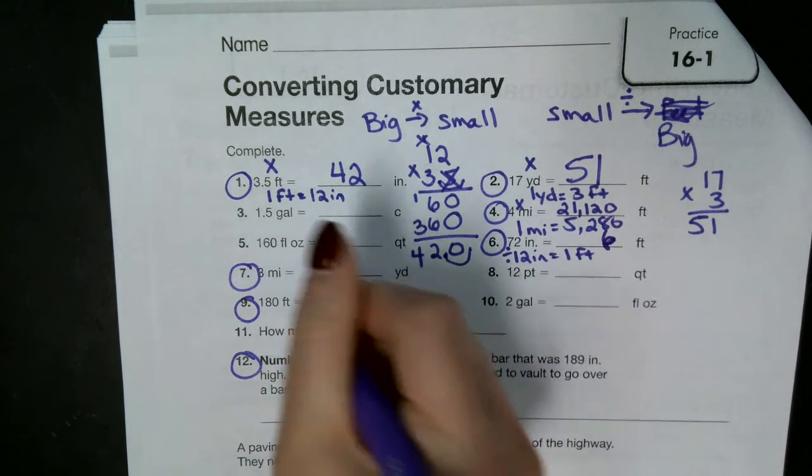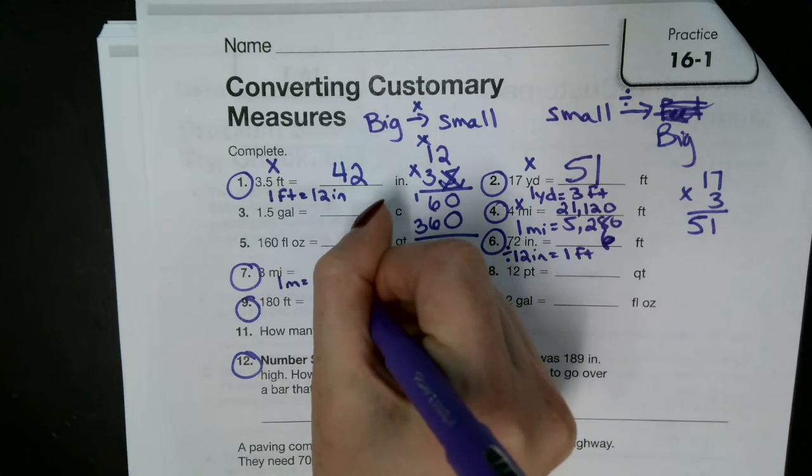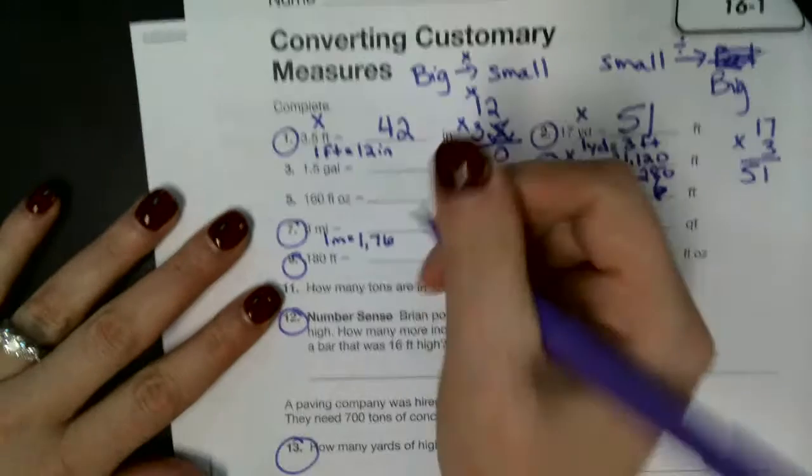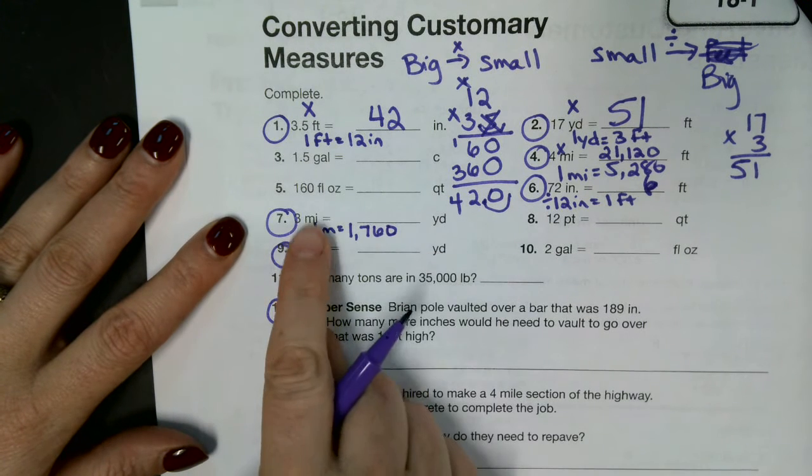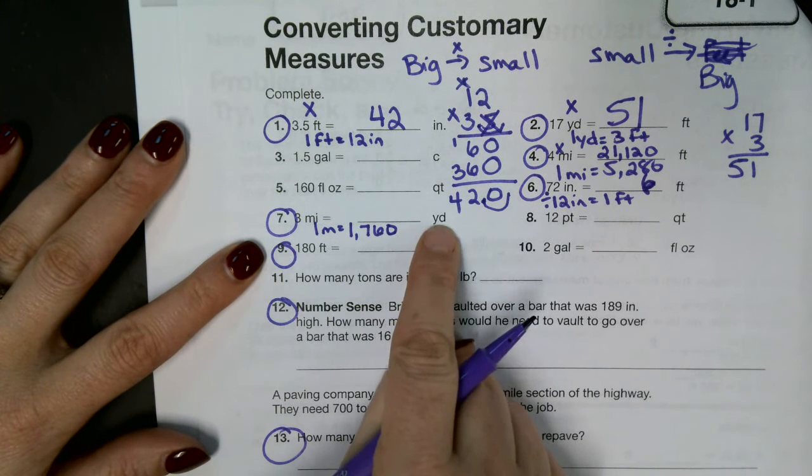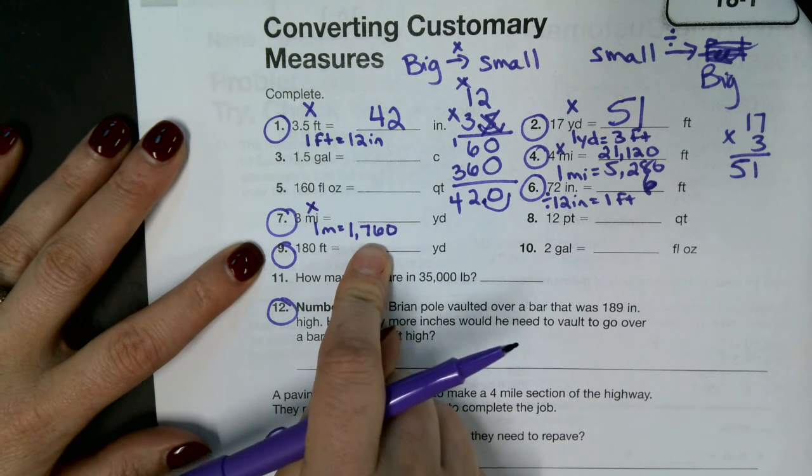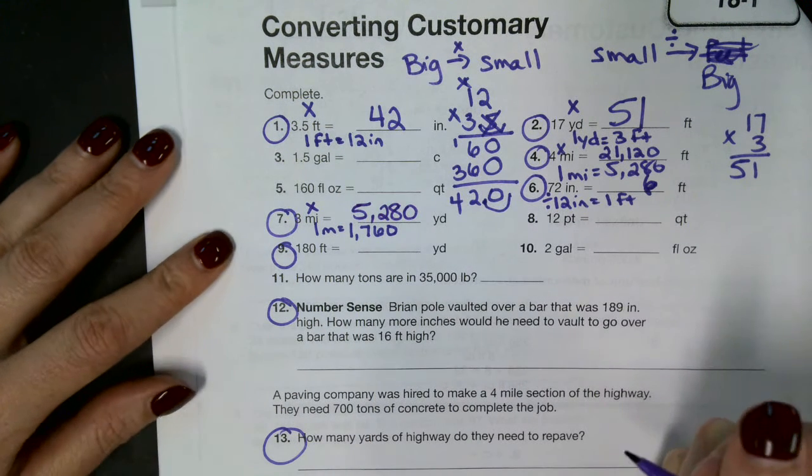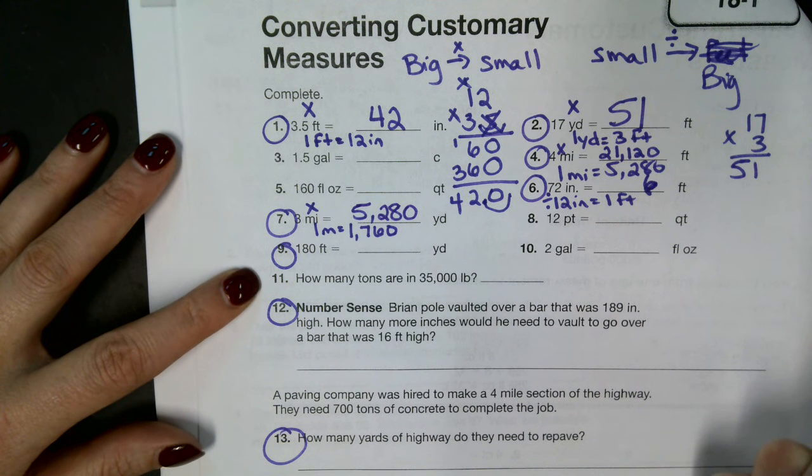Number seven. We know that in one mile, that is how many yards? 1,760. Look on the front. For yards. 1,760. Remember we're looking at yards. So which one's bigger? Miles or yards? Miles. So we're going big to small. Big to small tells us to do what? Multiply. So we're going three times 1,760, which is what? 5,280. 5,280 what? Very good.